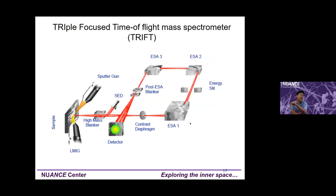Now let's look at the ToF-SIMS instrument schematic. We have the sample, a liquid metal ion gun for analysis, and a sputter gun — we can use gas guns such as cesium, oxygen, or argon — to sputter the surface for depth profiling. After sputtering, the analysis gun collects the secondary ions, which then go through an electrostatic analyzer (ESA) to refocus over a certain flight distance to the detector.